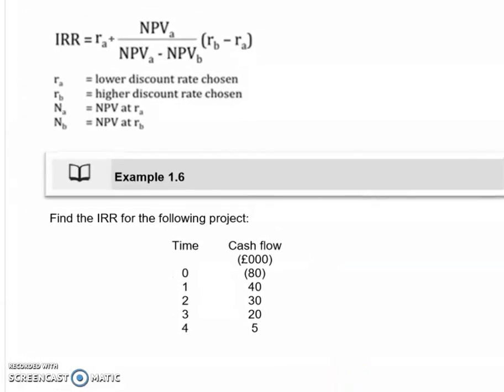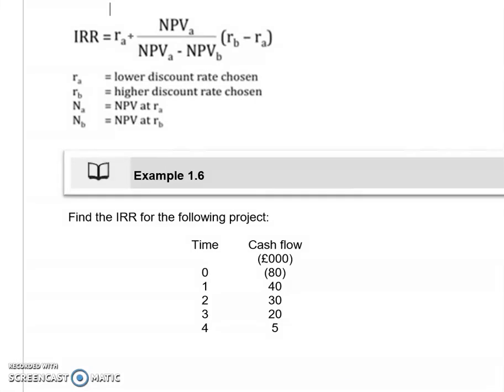We're going to have a simple example to find the IRR for a project. We have a number of years — time is all in years — and then we have cash flows: negative for the initial investment of £80,000, and then cash inflows over the next four years. With the internal rate of return, we need to look at two potential cost of capitals. Some questions will tell you to use, say, 15% and 20% cost of capital — they will inform you which ones to use.